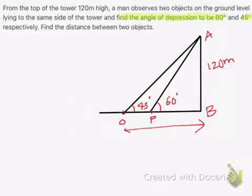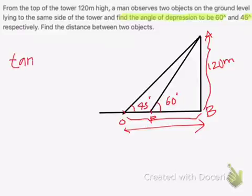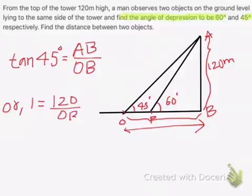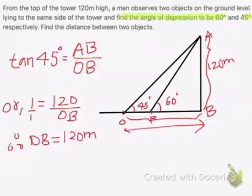By using our formula, this is the base and this is the perpendicular, so we can say tan 45 degrees equals perpendicular AB by base OB. As we know, tan 45 degrees is 1, so 1 equals 120 divided by OB. Therefore, we can cross multiply, which gives OB equals 120 meters.